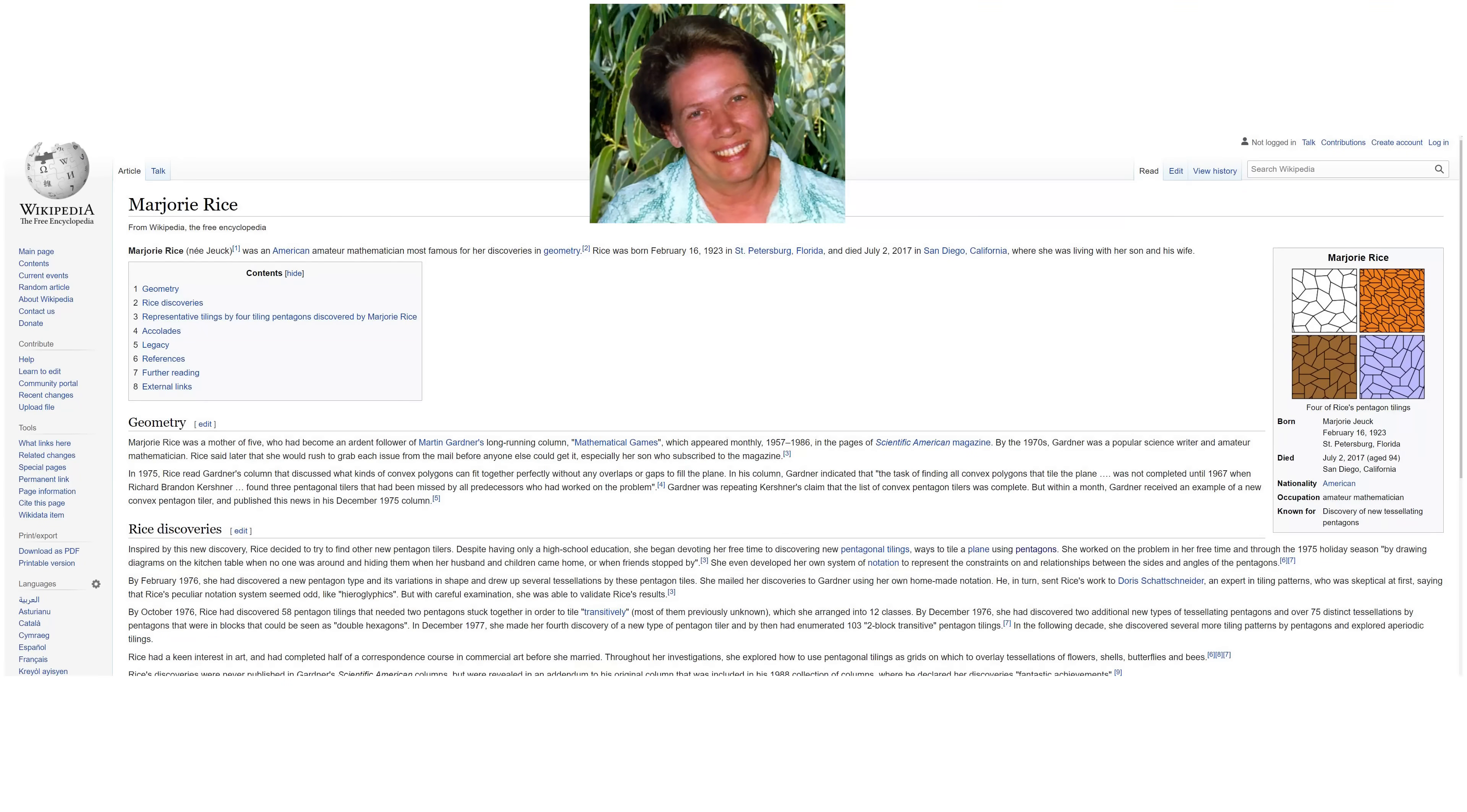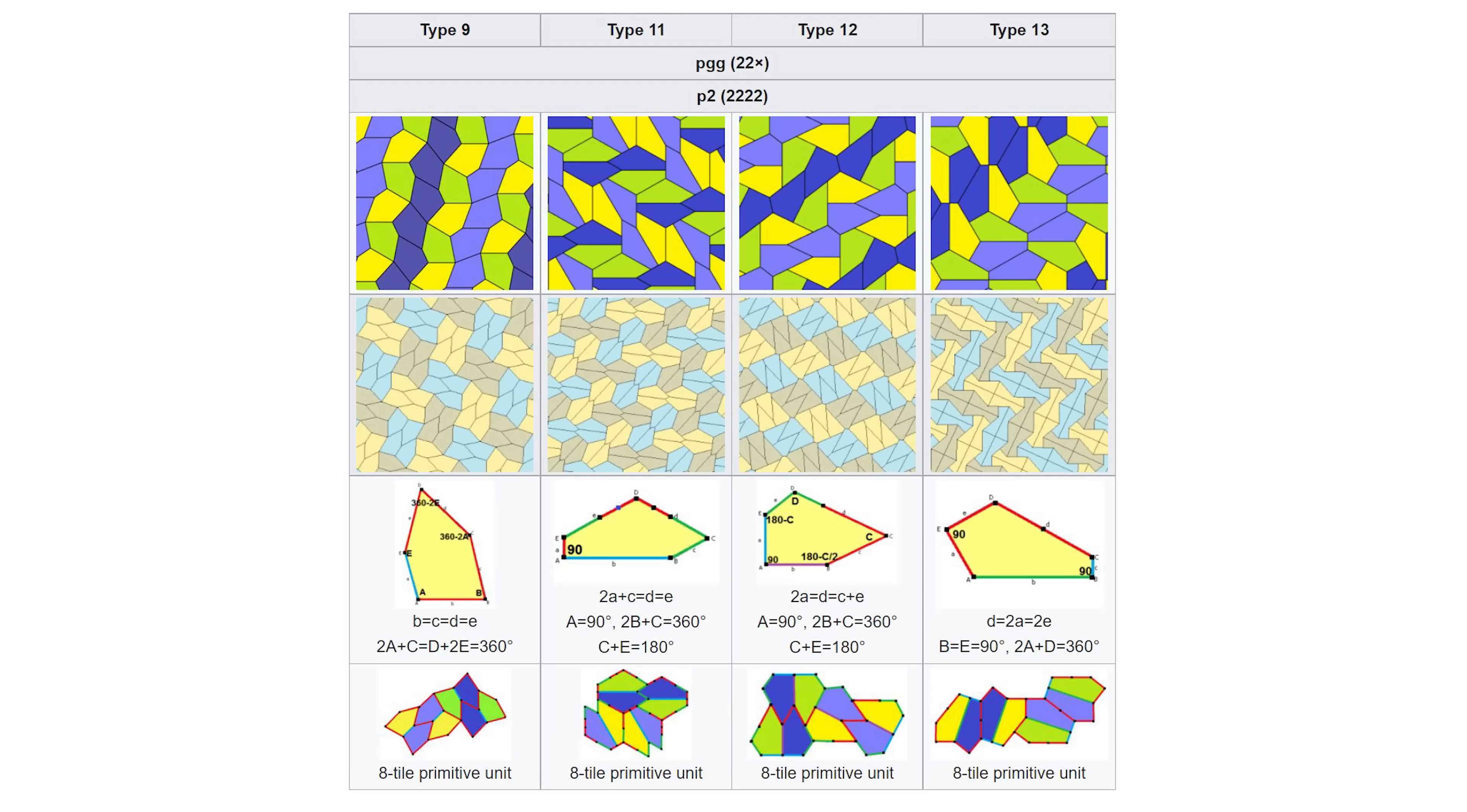What's even cooler than this is after the ninth pentagon was discovered that could tessellate, a woman by the name of Marjorie Rice, who only had a high school education in mathematics and was working as a stay-at-home mom taking care of her kids every day, actually discovered four new pentagons that could tessellate together. She would actually just do this on her kitchen table, drawing out pentagons and creating her own notation for the relationships between the pentagons.